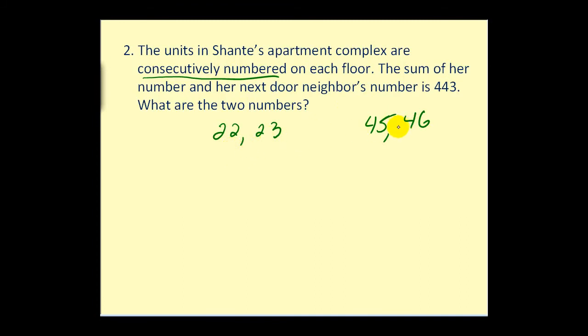So we need to represent this relationship using variables. So if x equals the first number, then the pattern that we see here is we have to add one to get to the next consecutive number. So x plus one would equal the second number. Next, to form our equation, it says the sum of her number and the next number is 443. Well, sum means addition. So our equation is going to be the first number plus the second number must equal 443. So there's our equation to solve.